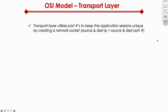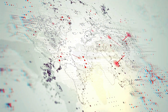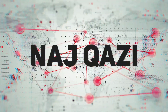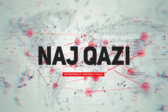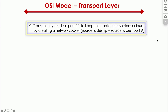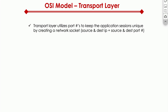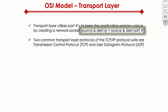Now let's talk about the transport layer. The transport layer utilizes port numbers to keep application sessions unique by creating a network socket. A socket is a combination of source and destination IP address and source and destination port number.